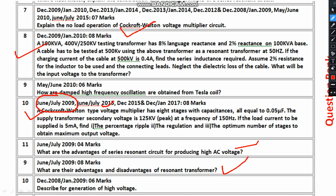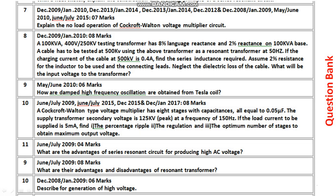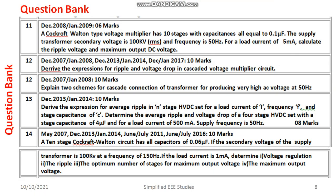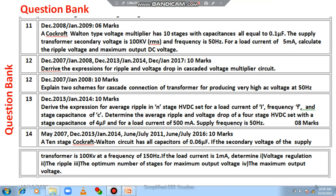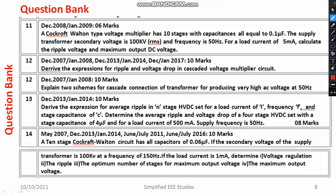Another question is: describe the generation of high voltage, which carries 6 marks. Mention the different types of methods of generation of high voltage. Then there is a problem on Cockcroft-Walton type DC set — only the numerical values have been changed but the method remains the same. You also need to derive the expression for ripple voltage and voltage drop of the cascaded voltage multiplier set.